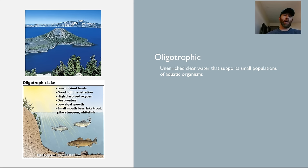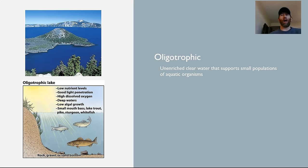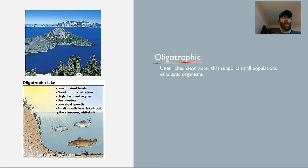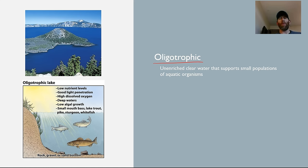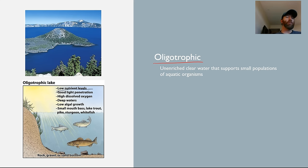I want to start with some vocab. Many of the types of water pollution cause certain changes in the water, and these vocab terms are paramount to understanding what those changes entail. The first term is oligotrophic. Oligotrophic bodies of water are really common here in the Northwest, with their low nutrient levels. When we talk about nutrients and enrichment in water, that is generally not a good thing.